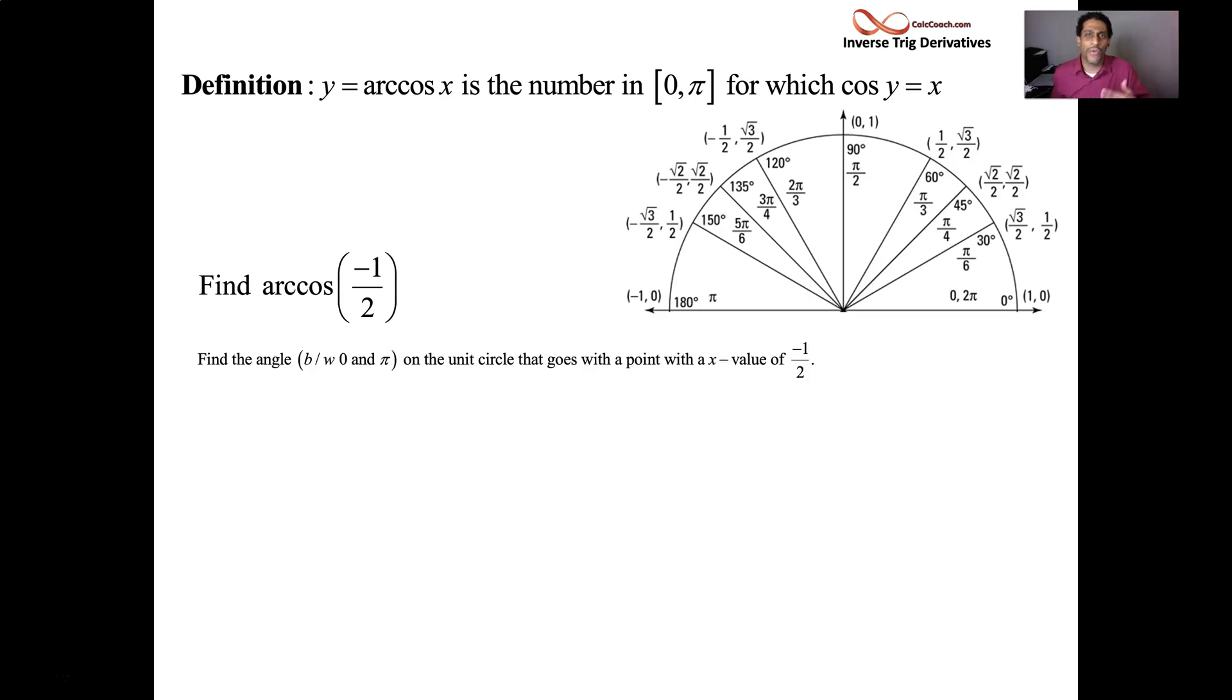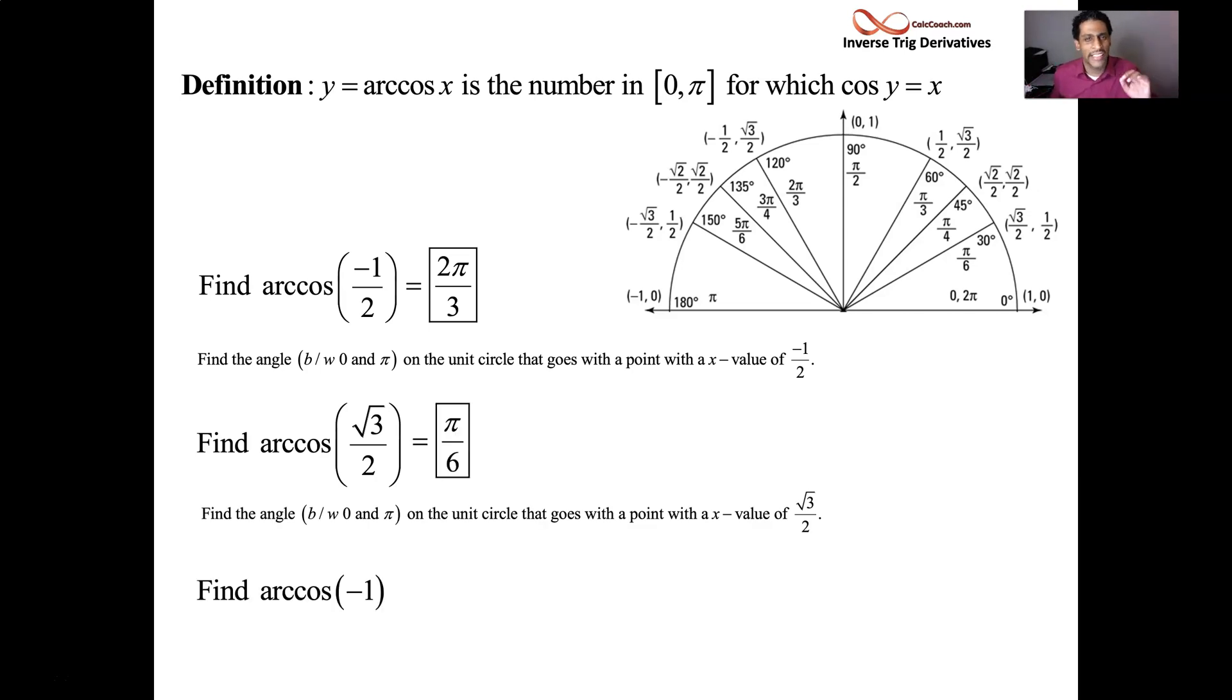Find the angle when plugged into cosine gives a negative 1 half. The answer is 2 pi over 3. Find the angle when plugged into cosine that gives root 3 over 2. The answer is pi over 6. Find the angle when plugged into cosine that gives a negative 1. The answer is pi.